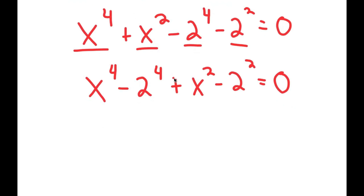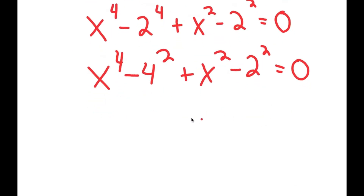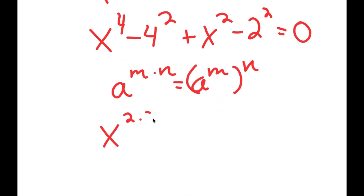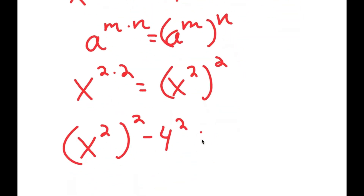Now, 2 to the power of 4 is 16, and 16 is also 4 squared. So I get x to the power of 4 minus 4 squared, plus x squared minus 2 squared. Using the rule that a to the power of m times n equals a to the power of m to the power of n, x to the power of 4 is the same as x squared to the power of 2. So now I have x squared to the power of 2 minus 4 squared, plus x squared minus 2 squared, all equal to 0.